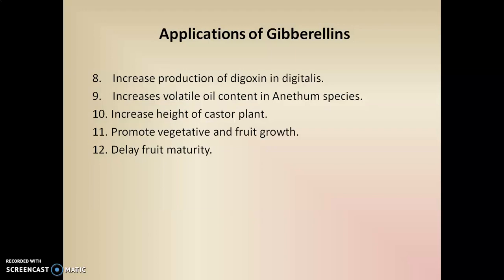By means of gibberellins, the volatile oil content in Anethum can be increased. Gibberellins also increase the height of the castor plant, similar to rice. They promote vegetative and fruit growth, showing an overall increase in growth properties in plants. They are also responsible for delaying fruit maturity. So gibberellin is a growth promoter responsible for the growth of the plant.